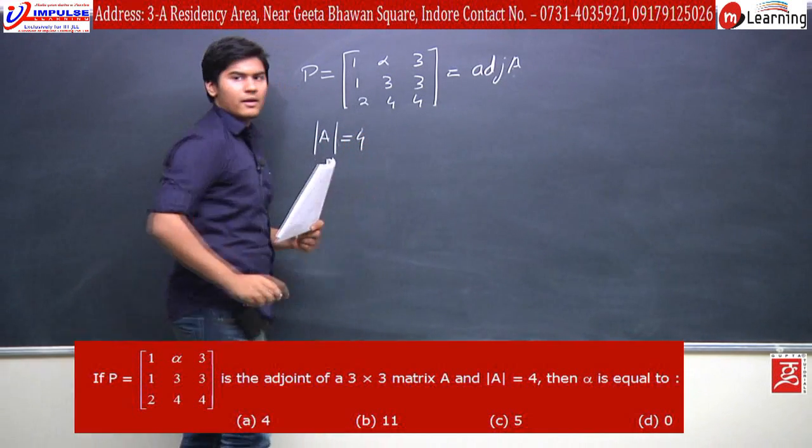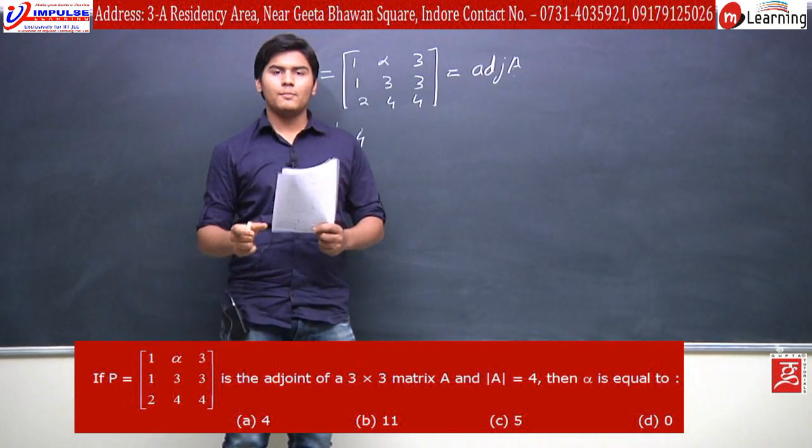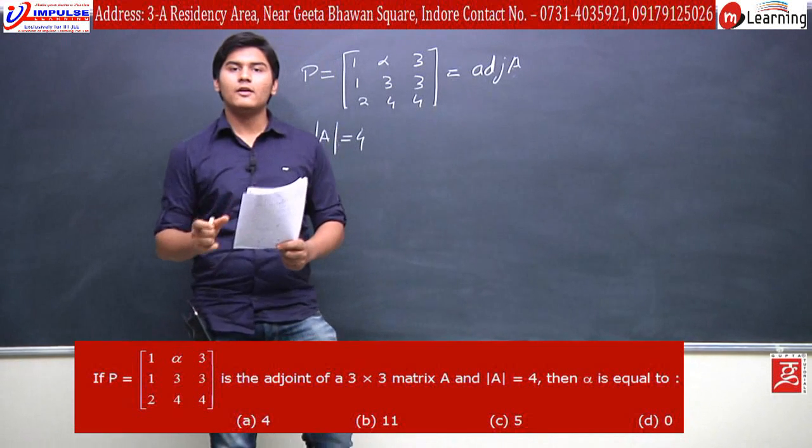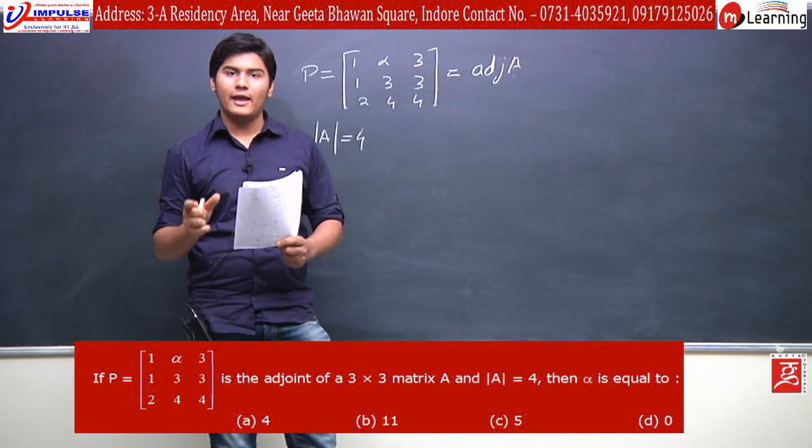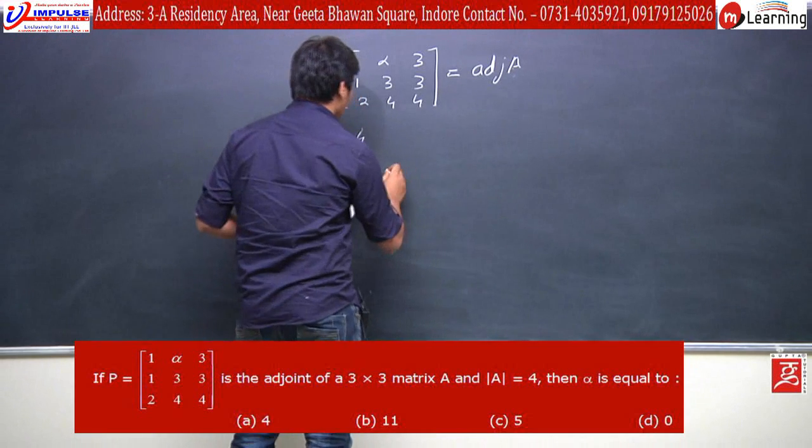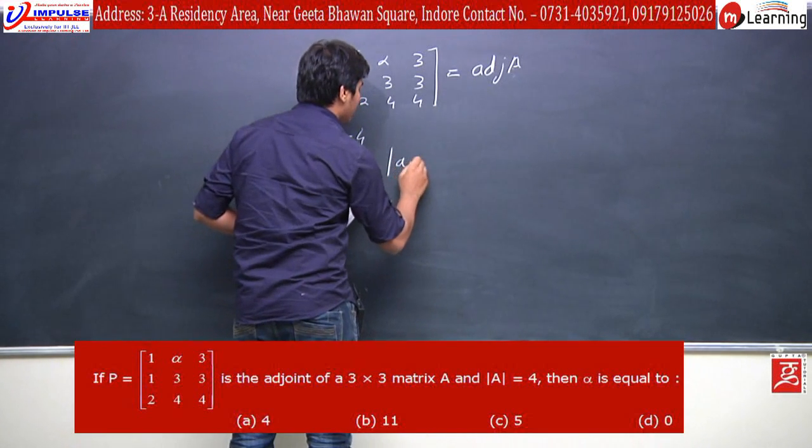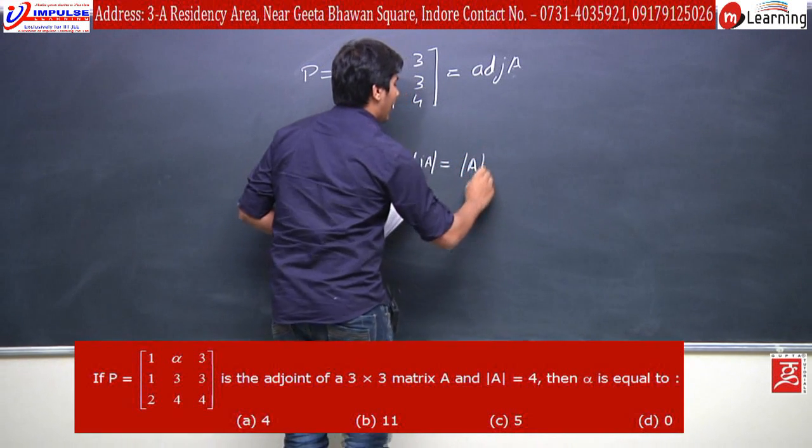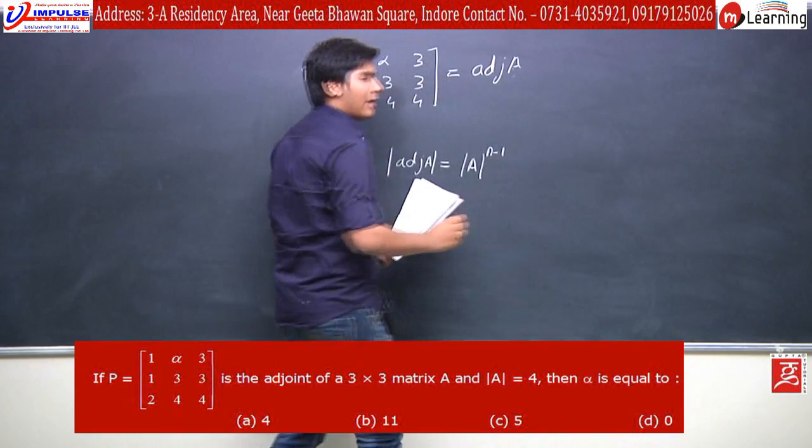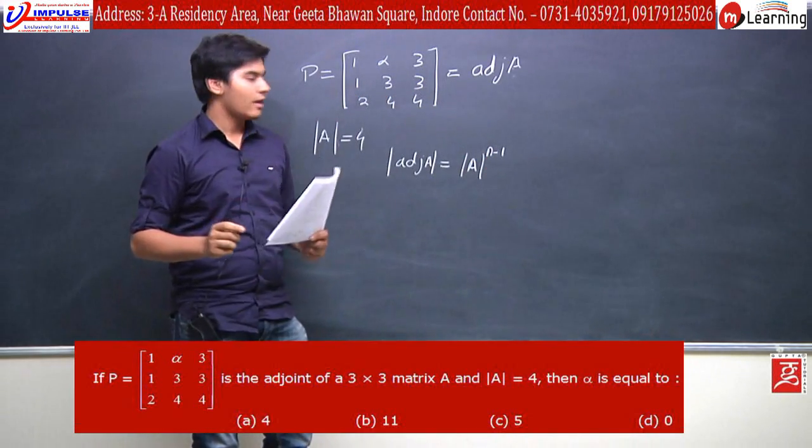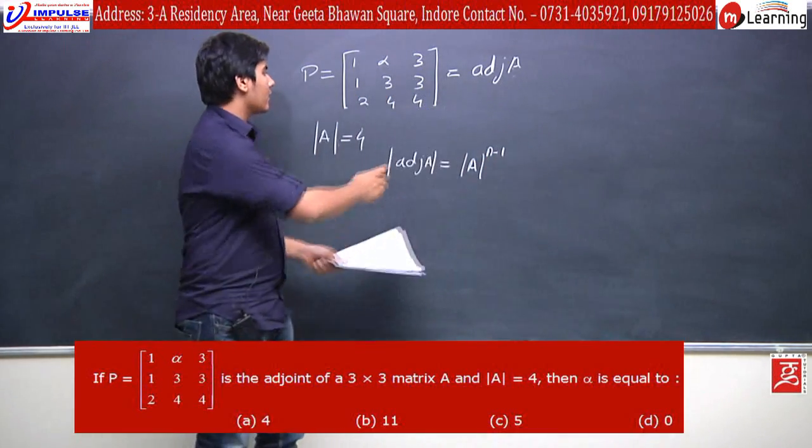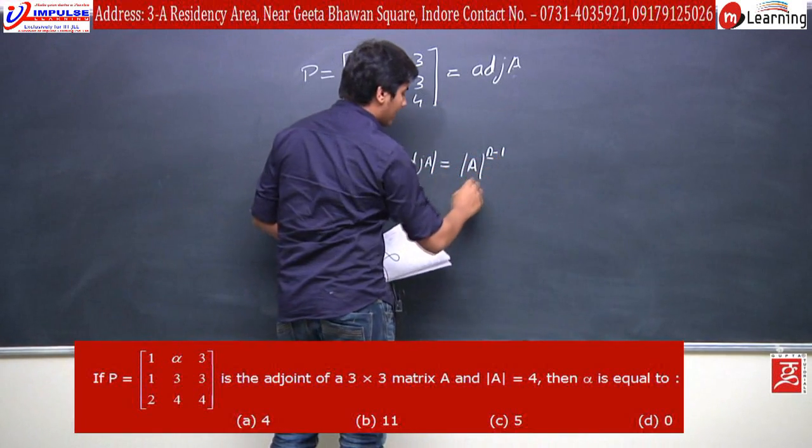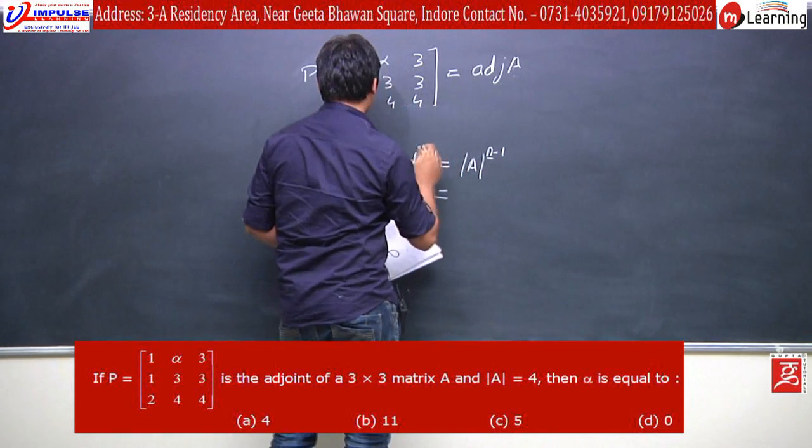Here we have to use the property of matrices. We need to know that determinant of adjoint A is equal to determinant A to the power n minus 1. Here n is the order. We know that n is 3 by 3, so n will be 3. Then we put 3 in place of n, and modulus A in place of 4.